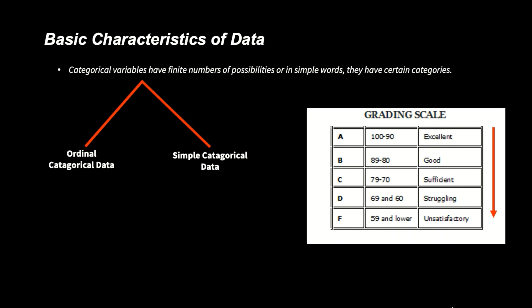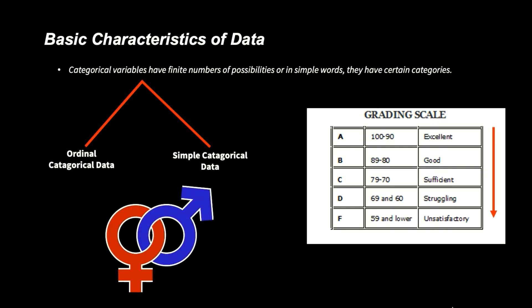In simple categorical data, we don't have any inherent ordering. Anything can come first. For example, the gender data will be simple categorical data. Male, female, and transgenders are equal, and anybody can come first.